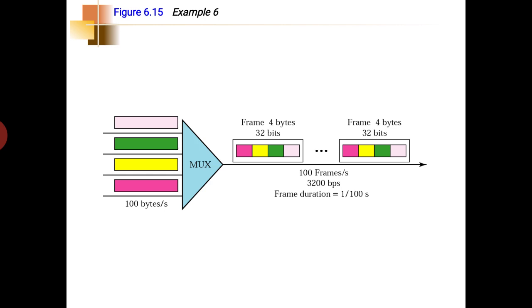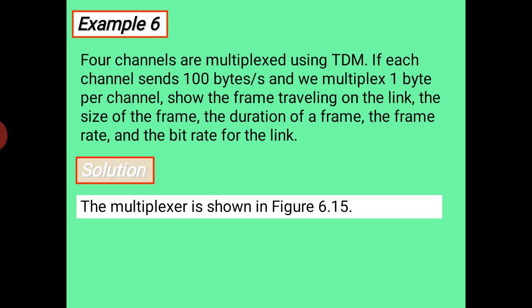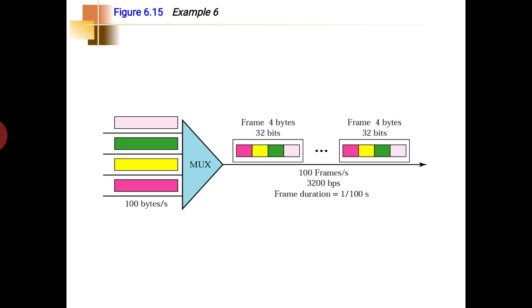This is a numerical problem. At 100 bytes per second per channel and 4 channels, we need at least 100 into 4 equals 400 bytes per second speed of the medium. Since 1 byte equals 8 bits, 400 into 8 gives 3200 bits per second. We need to transmit 3200 bits per second. The bit duration, that is the time to transmit 1 bit at 3200 bps, is 1 divided by 3200 seconds.